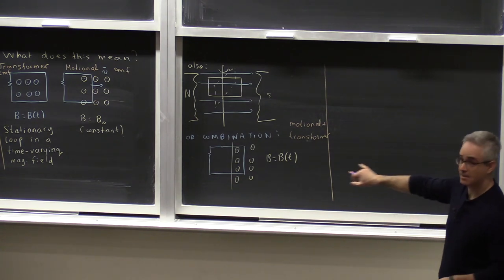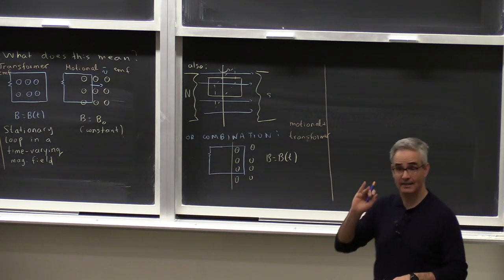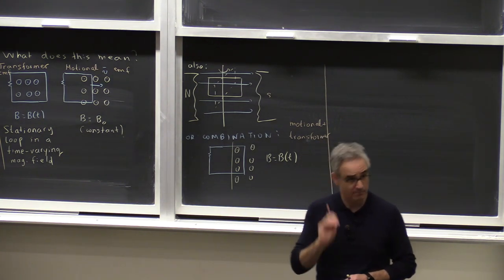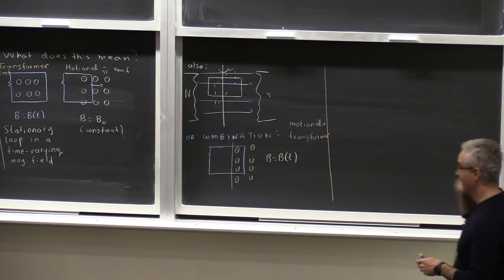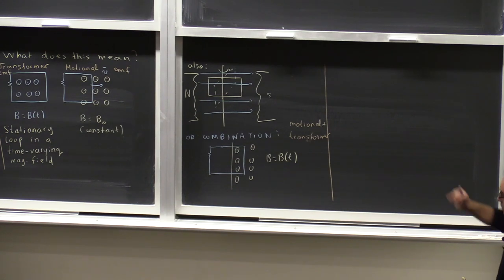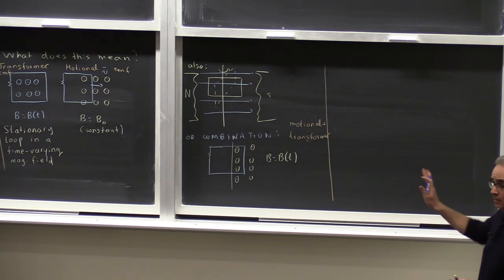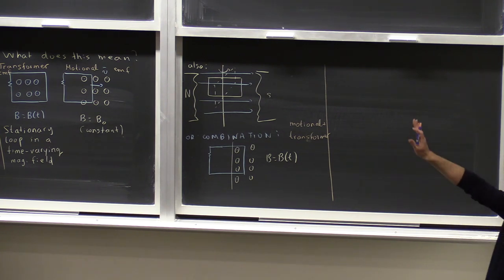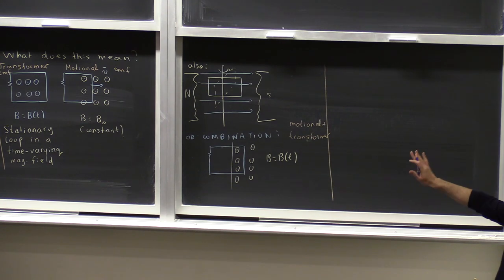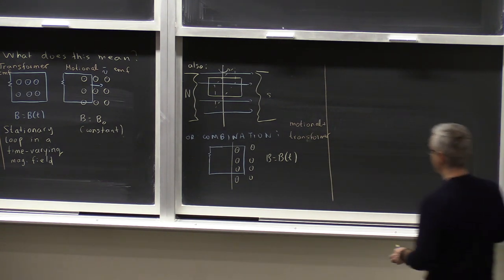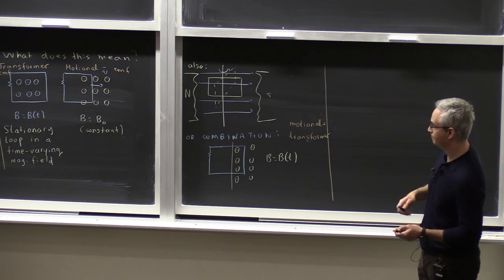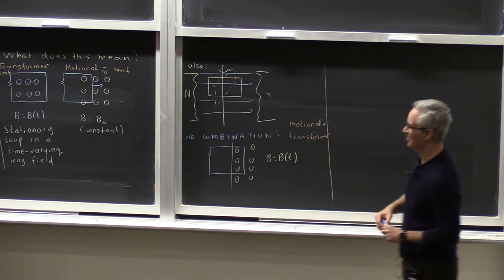This means the possibility of generating an electric field without a battery — without static charge distributions. In these cases there are no static charges anywhere, just as in antennas and access points. All these are dynamic. This is what we see in Faraday's law.